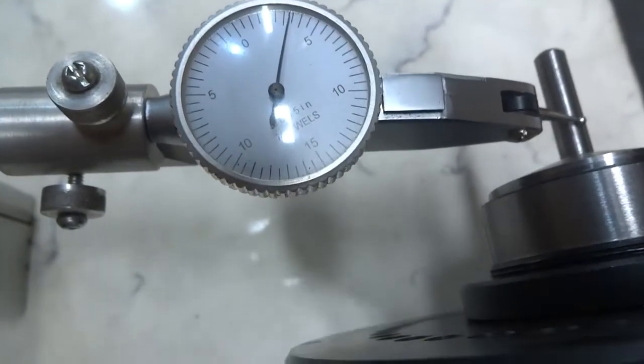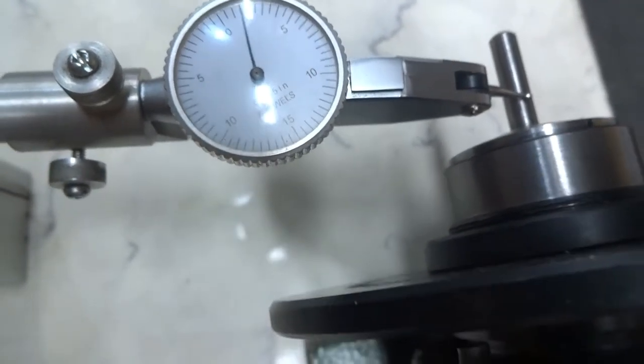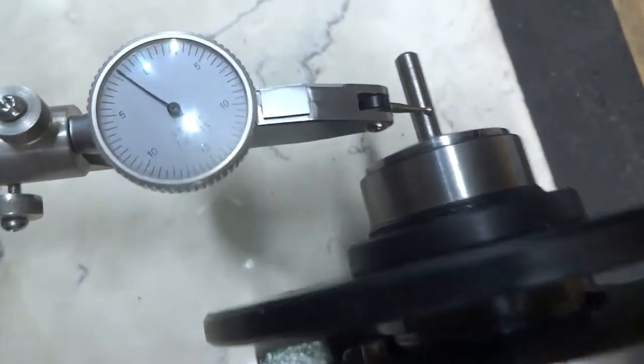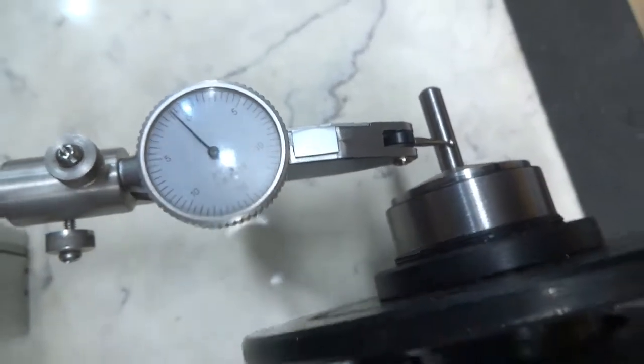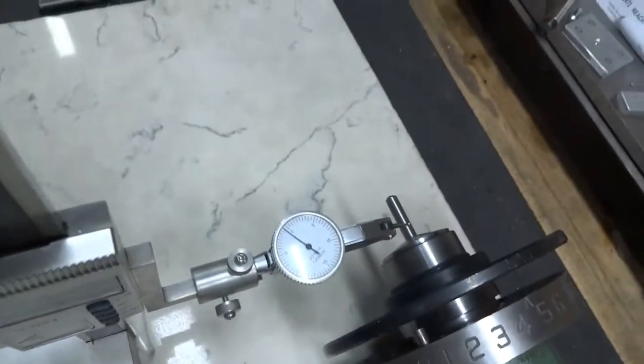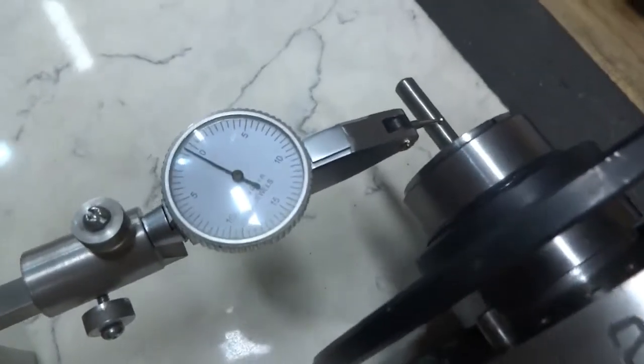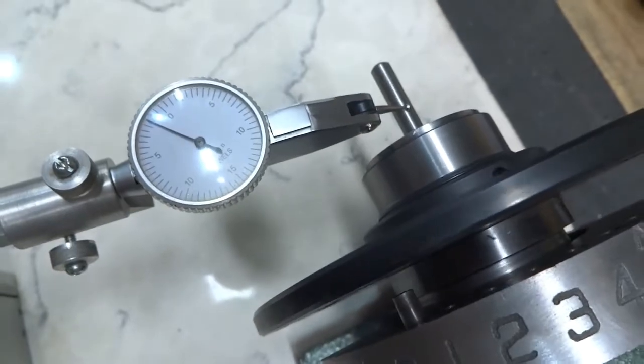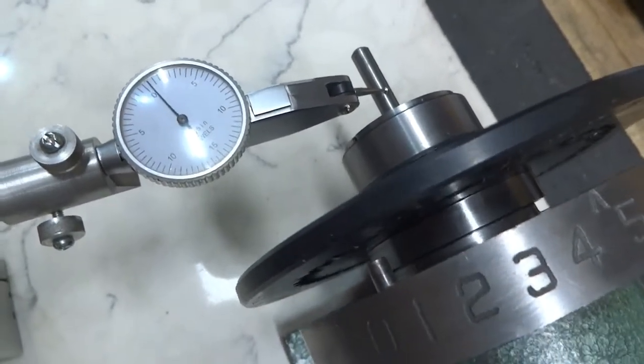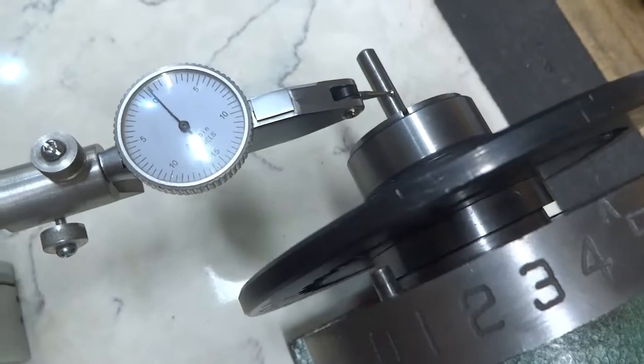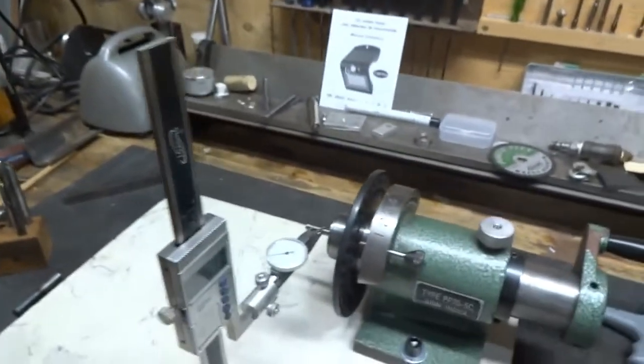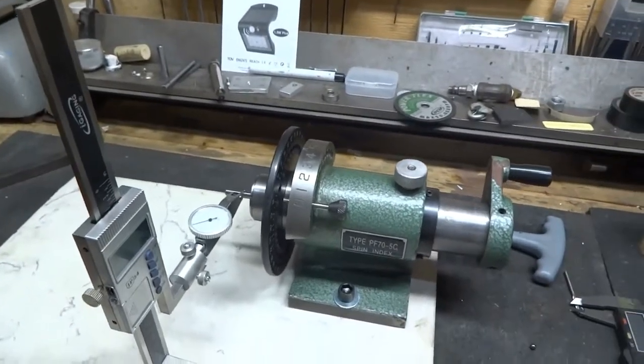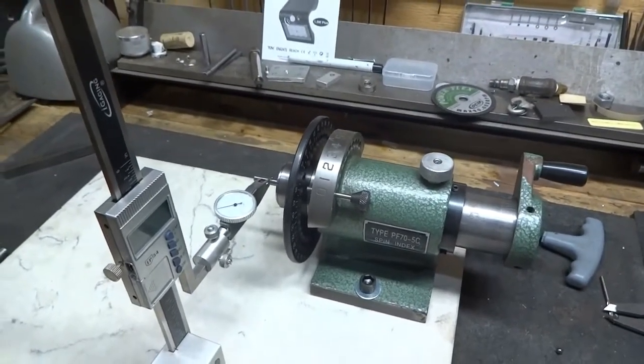We have moved three and a half thousandths. Slight pressure upwards, about a couple thou that way, at least five to six thousandths error. As we turn the Spindex, we should see that reflected in the run out. So this is not wonderful. I should have paid more money for the Spindex, but I do have somewhat of a solution that will improve this.